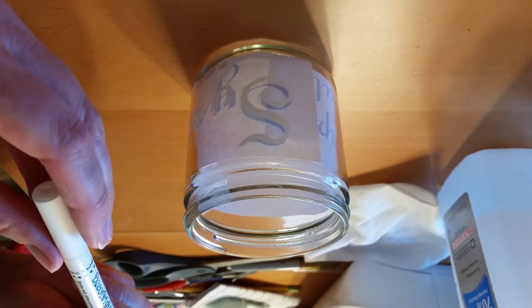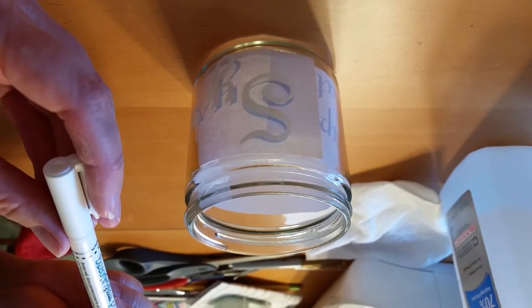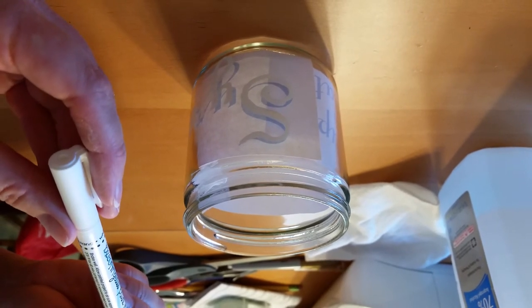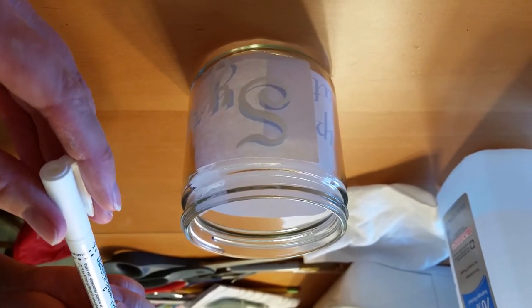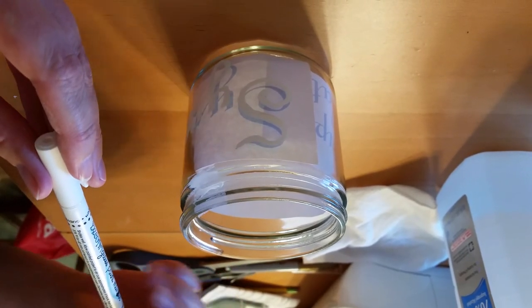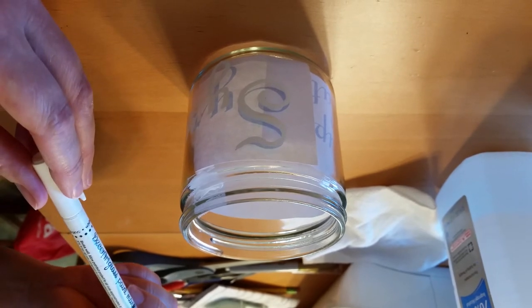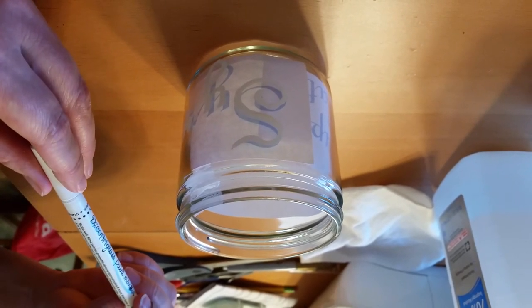And then you bake that in the oven. This one says air cure eight hours, so I let it sit overnight, and then bake at 375 degrees Fahrenheit for 40 minutes. You put it in the oven before it's hot. Otherwise, the sudden change in temperature will break your glass. And then you let it cool off in the oven, and then take it out.